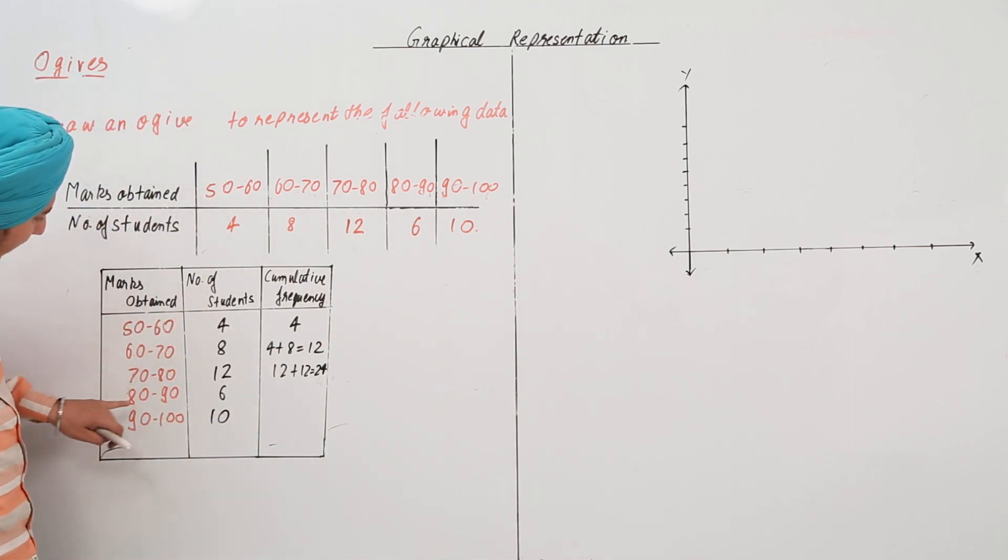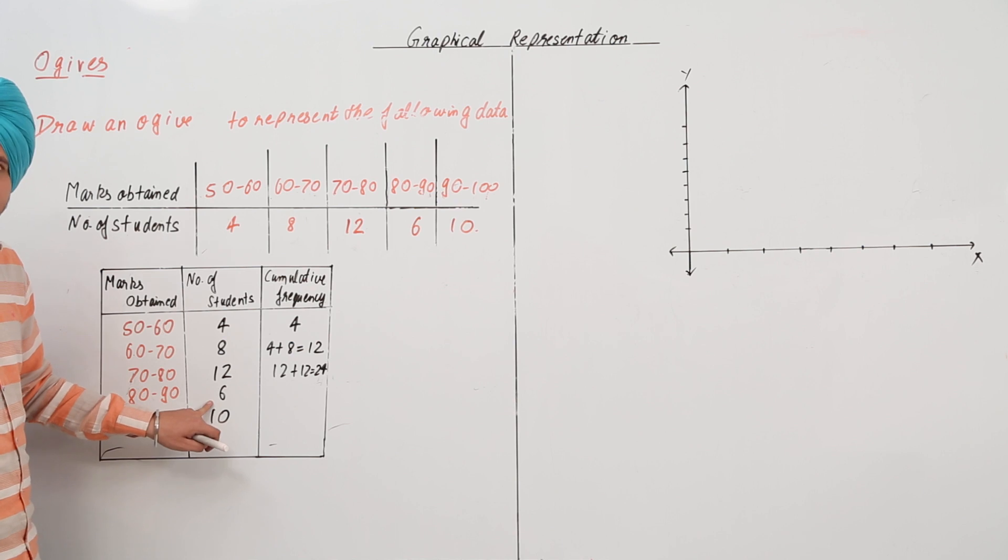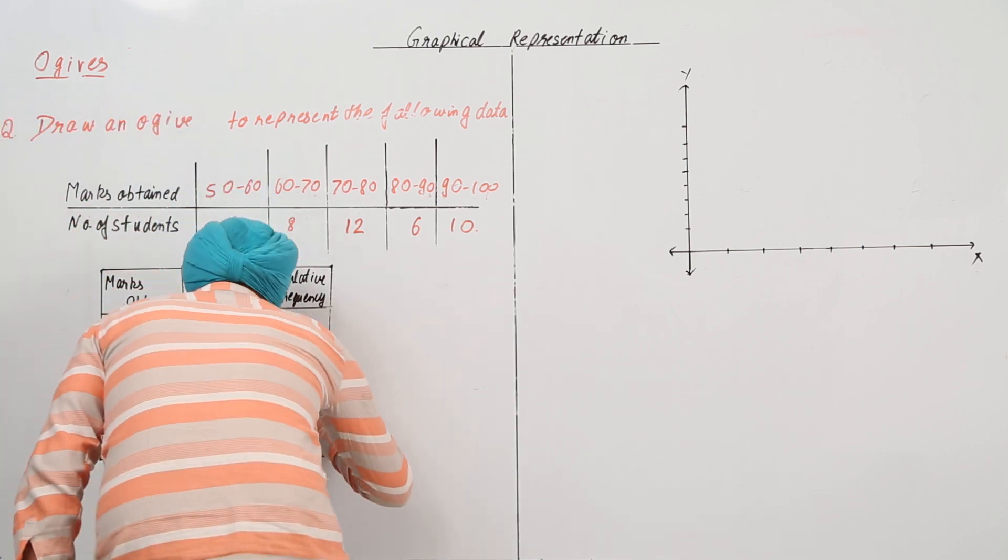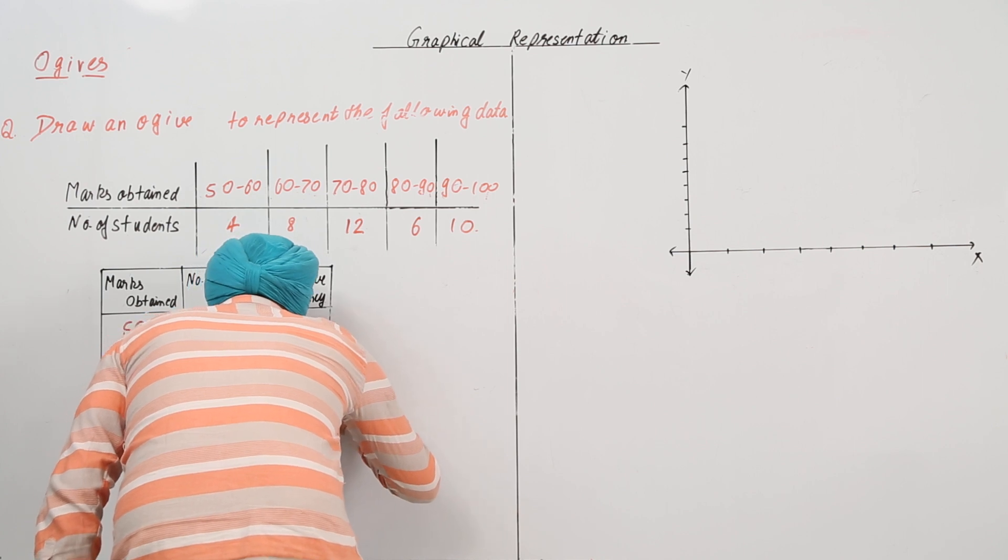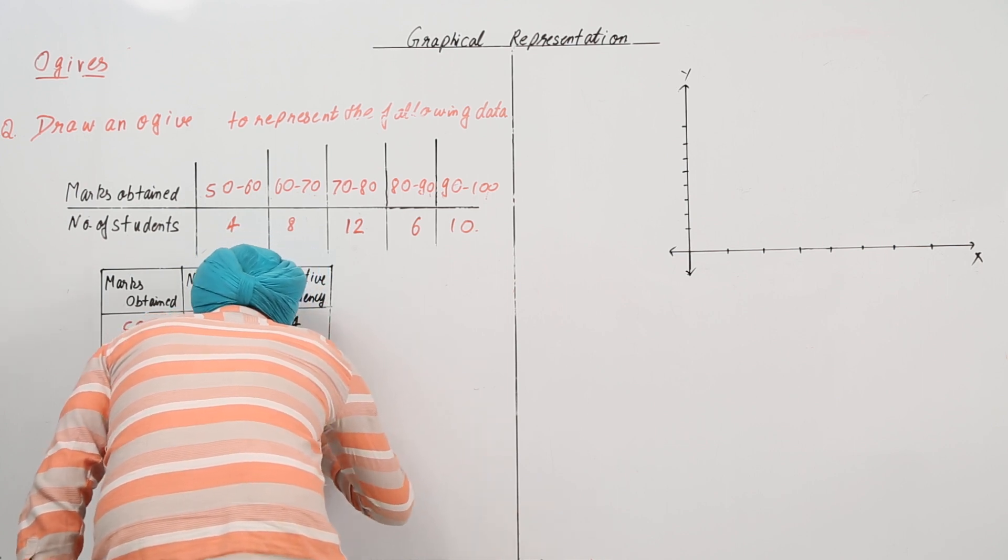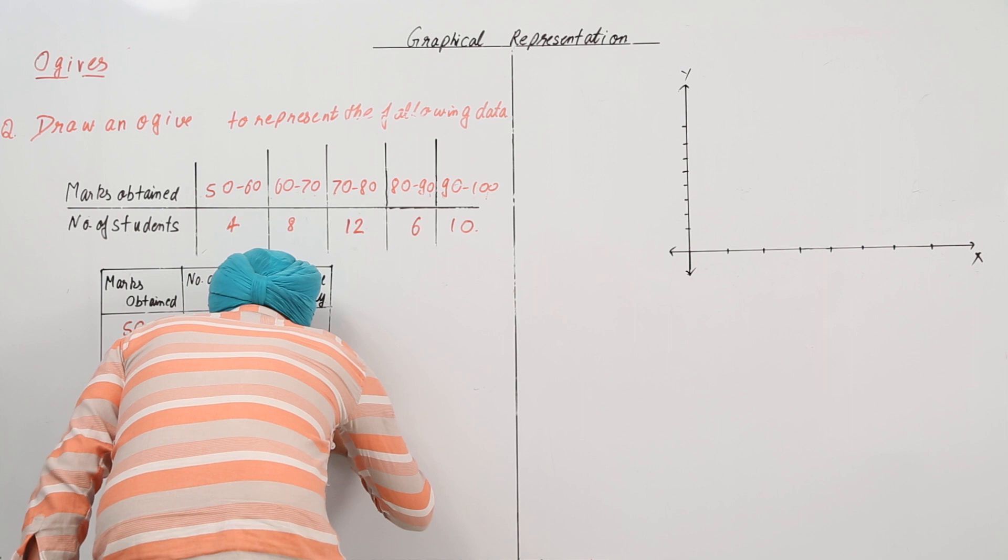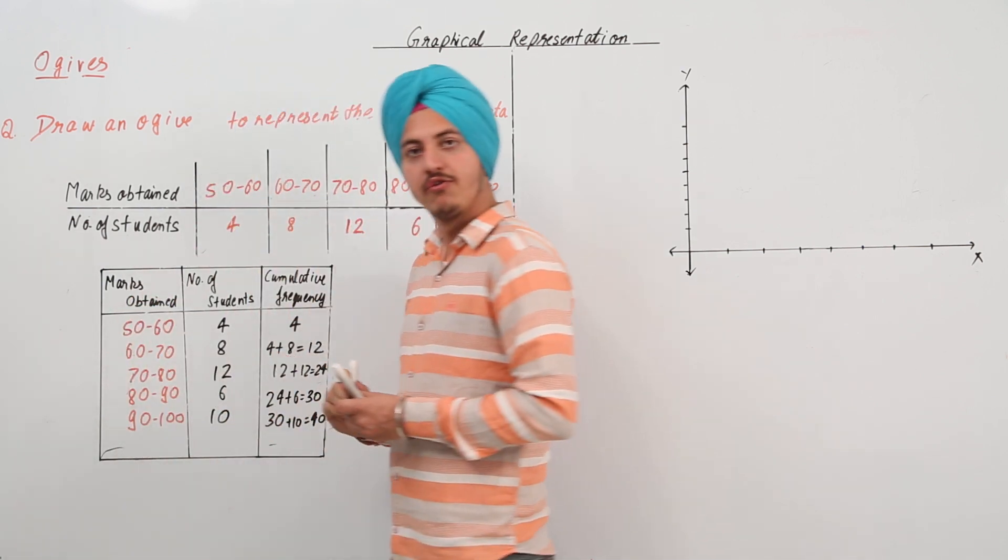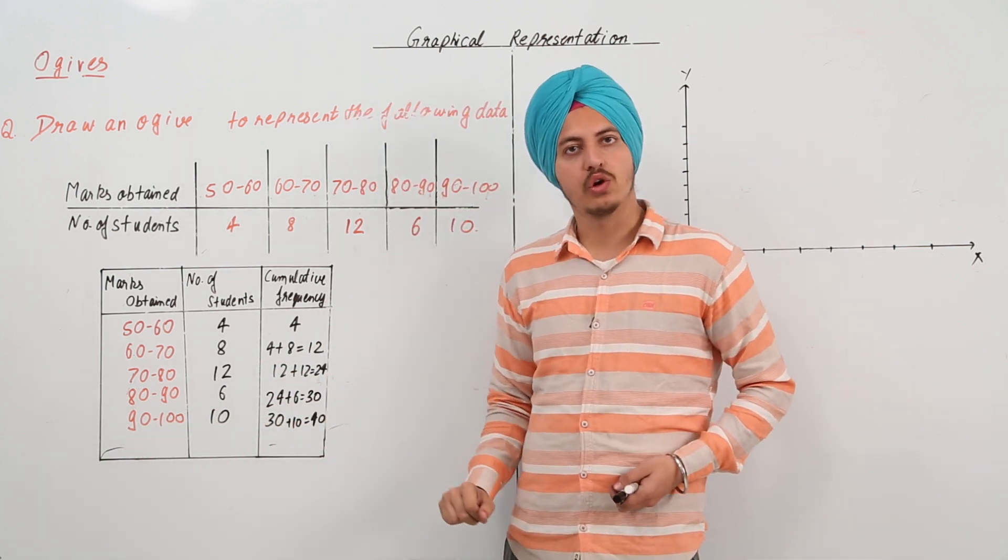Next, we have 80 to 90. 80 to 90, the frequency is 6. But, we also have to include this 24. So, this is going to be 24 plus 6, this is equal to 30 and same way for the other one. It is 30 plus 10, that is equal to 40 for 90 to 100.